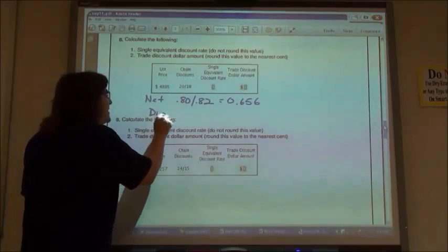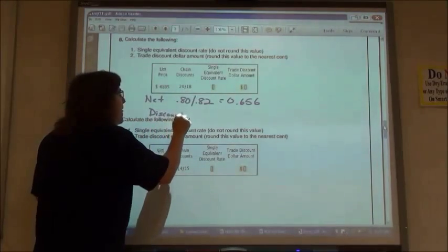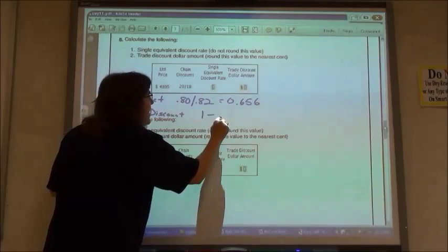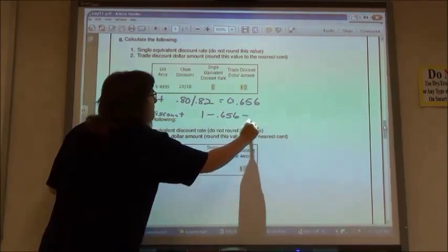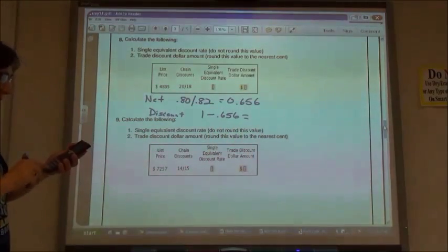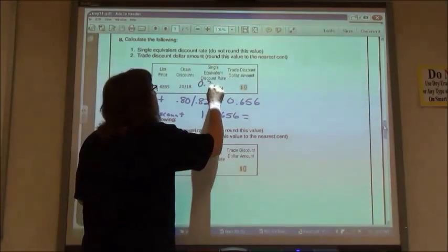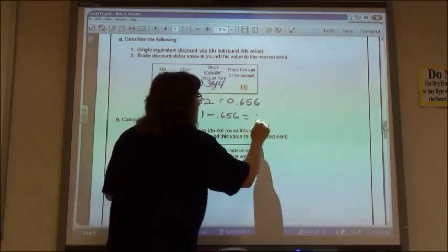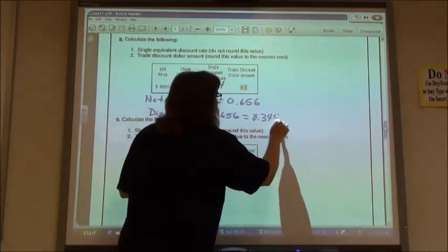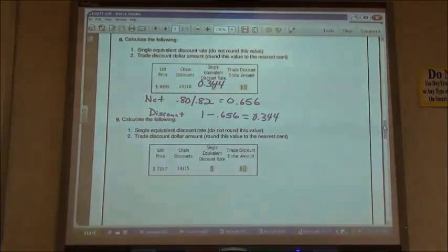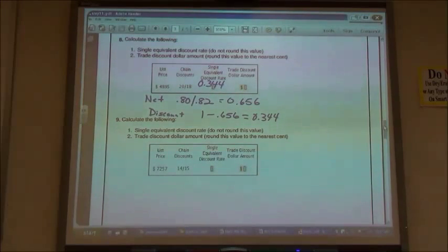Do I want to find the discount rate? So I'm going to take 1 minus that 0.656. And so if I take 1 minus 0.656, I get 0.344. So 0.344 would be my single equivalent discount rate.